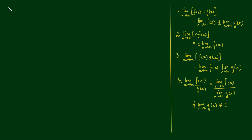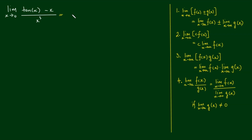In a previous video, we tried to numerically find the limit as x approaches 0 of tan(x) minus x, all over x cubed, and we found some uncertainty in this result. I stated that the result is actually one third, and in this video we're going to prove this result.